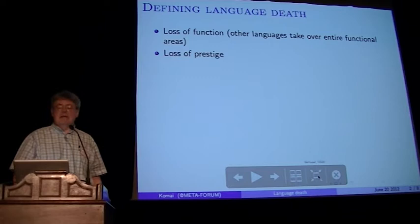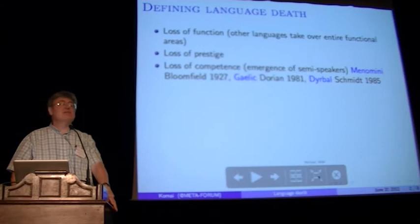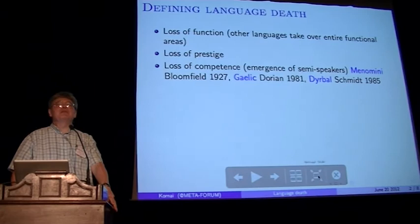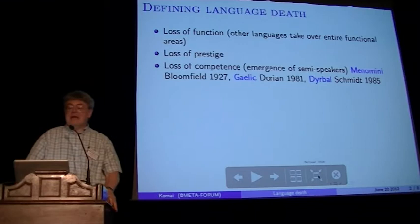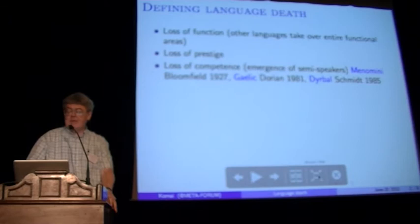The third thing, starting with Bloomfield actually, and very well documented, is loss of competence, also known as the emergence of semi-speakers — speakers who drastically simplify the grammar, the morphology, even the phonology of their native language and build a new generation version of it, much simplified compared to the original. For Gaelic, the process has been very well documented by Dorian; for Menominee, by Bloomfield himself; and for Dyirbal, by Annette Schmidt.